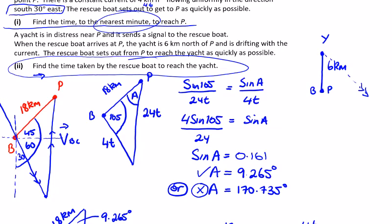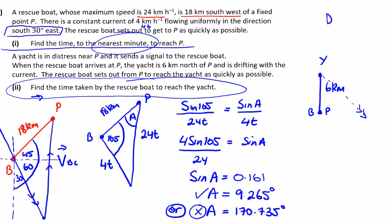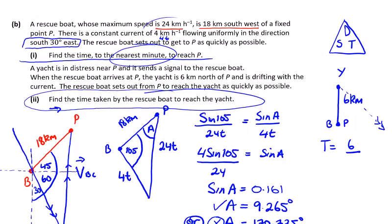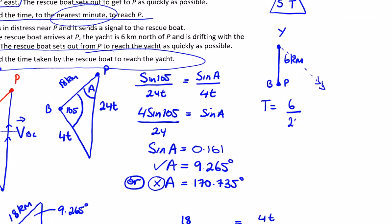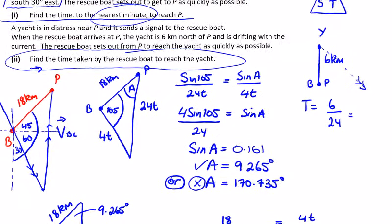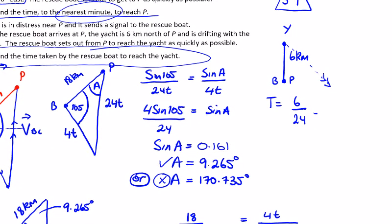We have to just take the distance divided by the speed. I always do the DST triangle: distance divided by speed is time. So the time taken is the distance which is 6 kilometers divided by the speed, which was 24 kilometers an hour. This is in hours and I'll multiply by 60 here to turn it into minutes. 6 over 24 is a quarter, and a quarter by 60 is 15 minutes to reach the yacht.